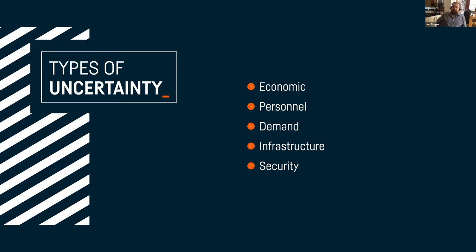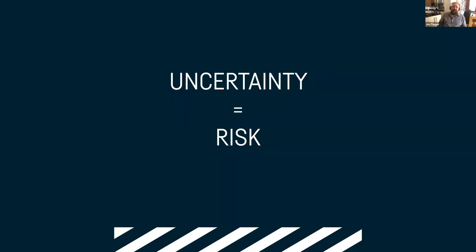In the internet world there's uncertainty of demand — how many transactions will you have to process, what sort of traffic are you seeing? We've definitely seen traffic patterns change as a result of the current situation. Infrastructure uncertainty includes whether resources will be available when you need them, potential outages from individual service failures, and security-related uncertainty — maybe you're carrying vulnerabilities you don't know about that could be exploited by bad actors.